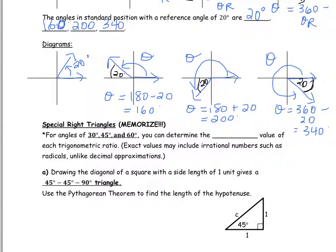Anytime you're given a reference angle value, draw an angle in standard position in each of the four quadrants, draw in the reference angle and label it. Then you can determine theta by knowing the connections between the reference angle and the angle in standard position in each quadrant.